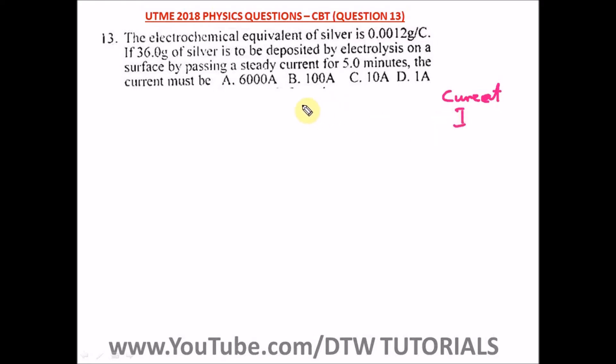So m is directly proportional to Q, where m equals zit. What is z? That is the electrochemical equivalent. I is for our current and t is for our time. So we are definitely looking for I.